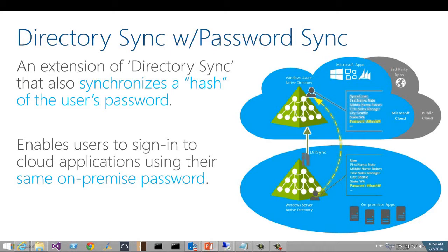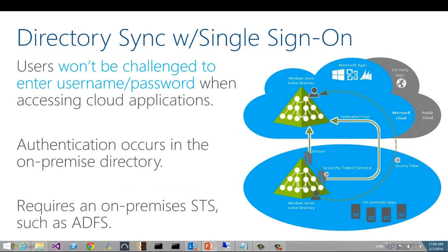Now, for the password sync extension, you should know that the user's passwords are hashed, and it's the hash of the user's password that is stored in Windows Azure AD and not the password itself. Scenario three is called directory sync with single sign-on. This is also known as federated identity because of a federation trust that actually exists between the on-premise AD and your Windows Azure AD tenant. With this solution, users will not be challenged for their username and password if they have already been authenticated on-premise. In this scenario, the authentication is actually occurring in the on-premise directory, which is different from the previous two where the authentication is actually occurring in Windows Azure AD.